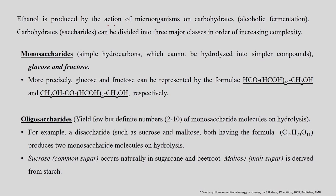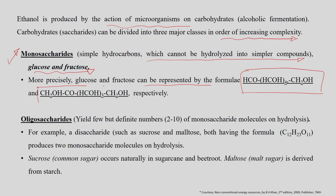Ethanol is produced by the action of microorganisms on carbohydrates, which are classified into three types in order of increasing complexity. Monosaccharides are simple hydrocarbons that cannot be hydrolyzed into simpler compounds — examples include glucose and fructose, both represented by the molecular formula C6H12O6.